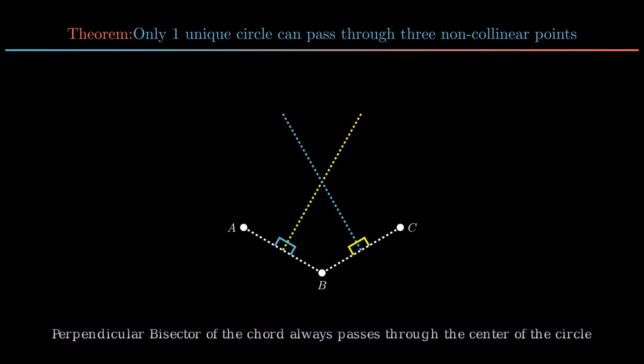The point where these two bisectors meet will be the center of the circle and is denoted by point O. Hence the theorem is proved.